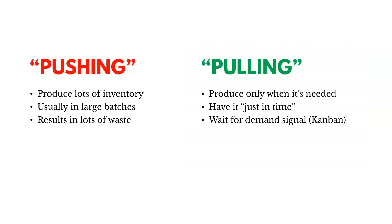Kanban talks about two inventory management techniques — one good, one bad. Pushing is where we're producing lots of inventory, usually in large batches, and it results in lots of waste — a lot left over that we've got to pay to store. Pulling is what Kanban seeks, where we're only producing when it's needed, just in time, and we wait for a demand signal — a Kanban — before we produce anything.